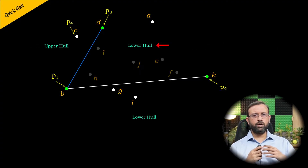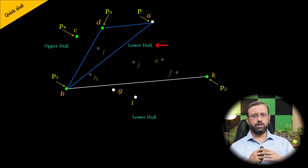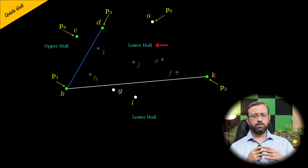Now let us look at the lower hull for the line segment P1 and P3 and compute its convex hull. We select point A as point P, as it is the only point in the lower hull for P1-P3 — all other points are already discarded. The area formed by P1, P3, and P is computed. Since point A is the only point in this lower hull, the area is the largest and there are no more enclosed points. So point A becomes point P5 and is part of the convex hull.